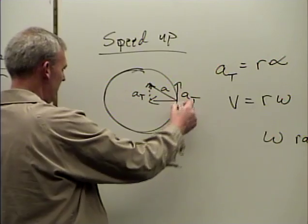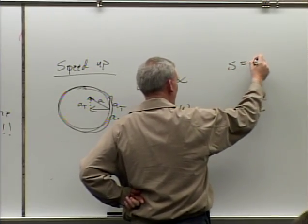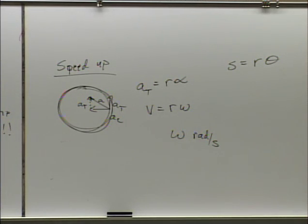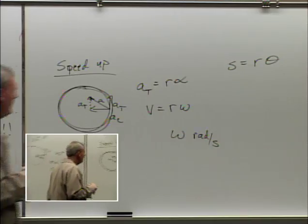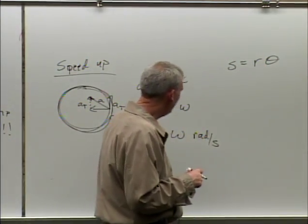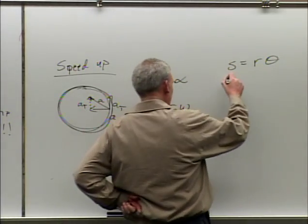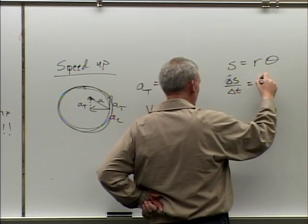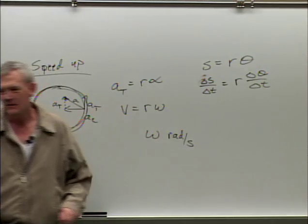Going a distance around a circle: s equals r times theta. Remember theta is in radians, which is where we get r times 2π — that's 2πr, the circumference of a circle. If you go completely around, you go 2π radians.